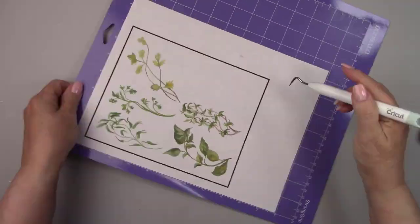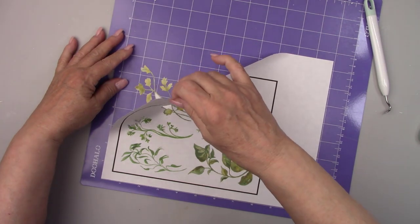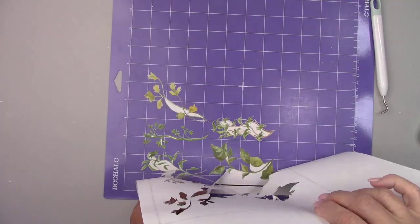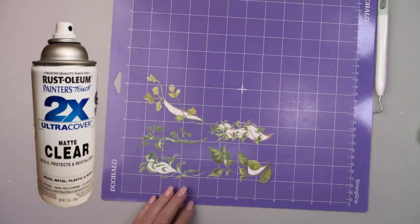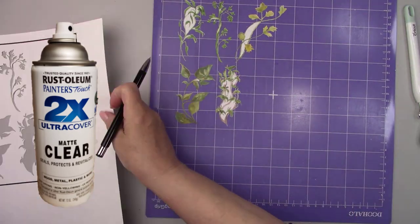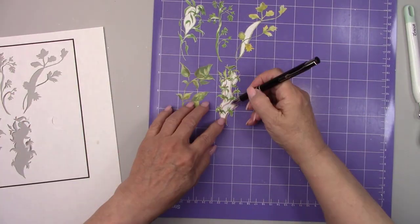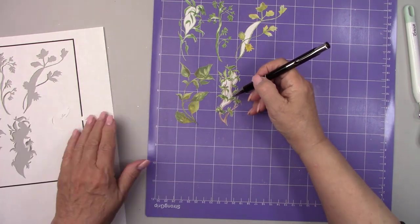I printed and cut out all the pictures of the herbs using my Cricut machine. I sprayed them with a matte spray to seal the ink so it doesn't run when I decoupage it to the boxes. And now I'm removing them from the paper.